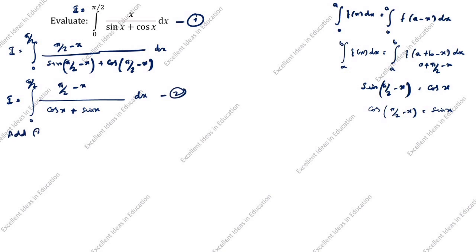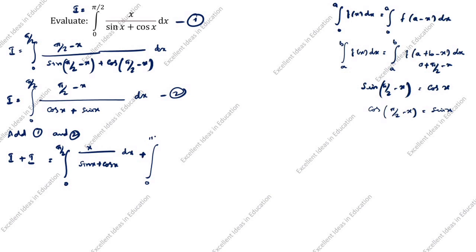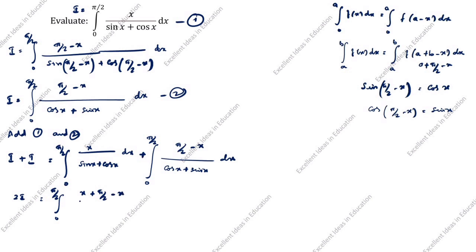Now add the first and second equations. I plus I gives 2I equal to the integral from 0 to π/2 of (x + π/2 - x) divided by (sin x + cos x) dx. Notice that the denominator sin x + cos x and cos x + sin x are the same, so we can add the numerators directly.